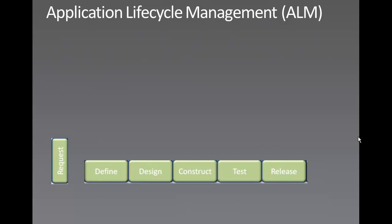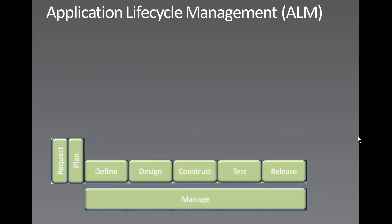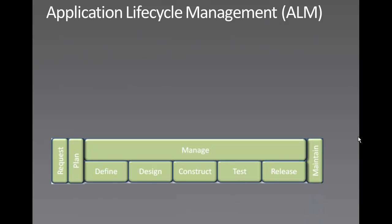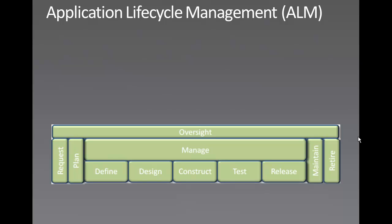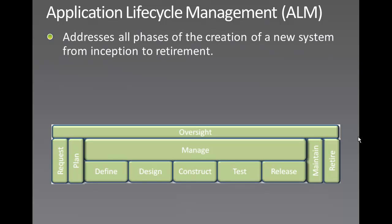After requesting the project, you begin to plan the project — what you are going to do exactly and when. Then after that you start with SDLC and manage the SDLC. After that there is something called Maintain the Application, which means fixing bugs and giving support. After maintaining the application, there is a stage called Retirement — either the application will not be used anymore, or you will hand it over to the customer with no further requests. So as you can see, ALM has oversight of all stages of the application, from its start as an idea to its retirement. ALM can be defined as addressing all phases of creation of a new system from inception to retirement.